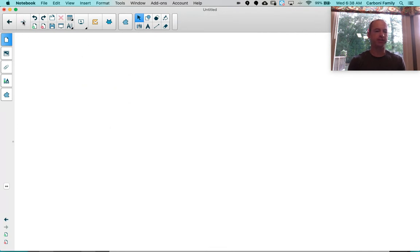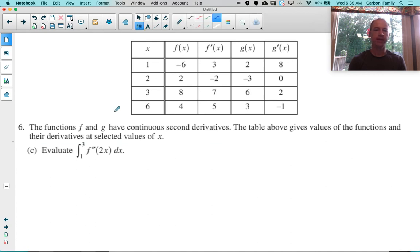Part C is an antiderivative. Notice it says evaluate, not estimate. We're not going to do a Riemann sum or trapezoidal rule. We're going to actually find the value of this, which means we need to find the actual antiderivative. In general, the antiderivative of a derivative is just the original function. Unfortunately, the inside is a little bit ugly. It's not just F double prime of X, it's F double prime of 2X, so this would be a U sub situation.